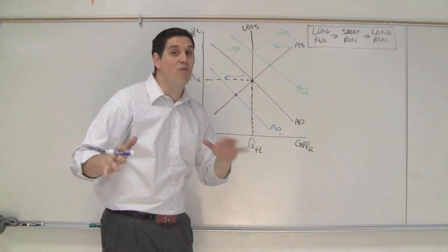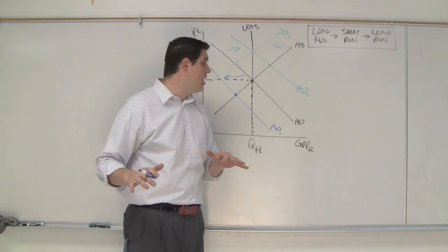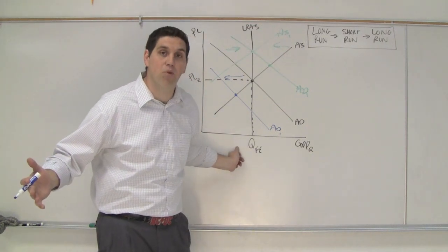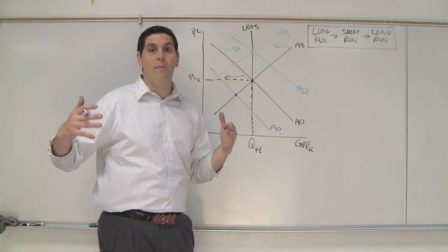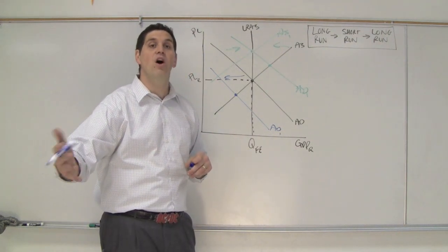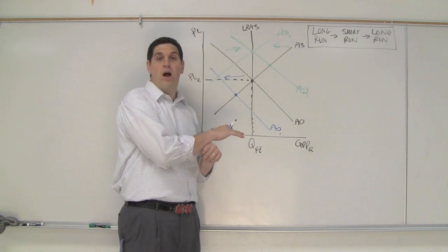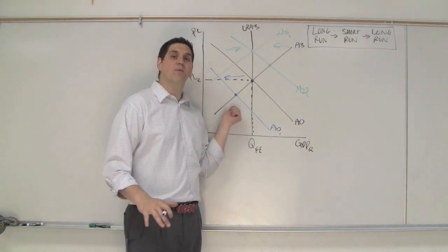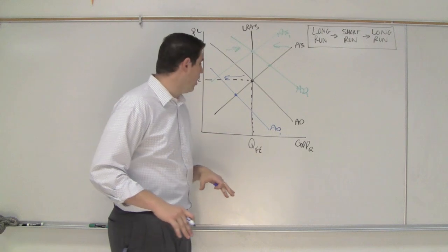And in theory if wages and resource prices are flexible the idea is this. If you're unemployed, let's say there's 15 percent unemployment, and you're unemployed. You lose your job. You're willing to go work for another person for less than what you used to work at your other job. You'd accept a lower wage.